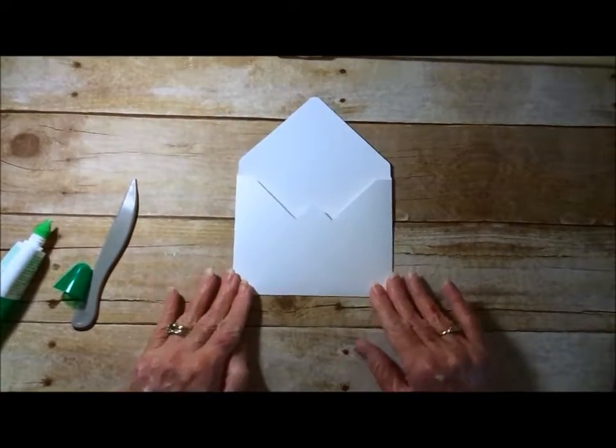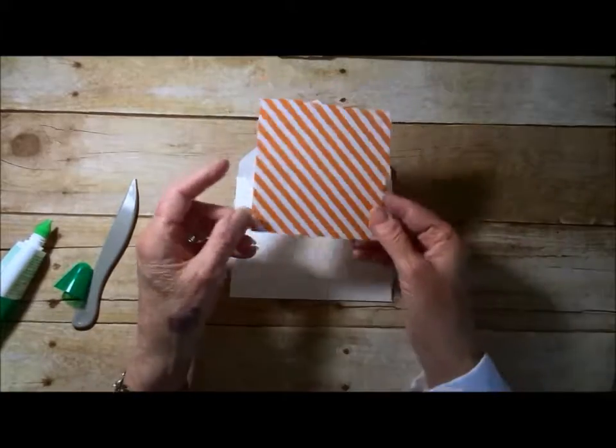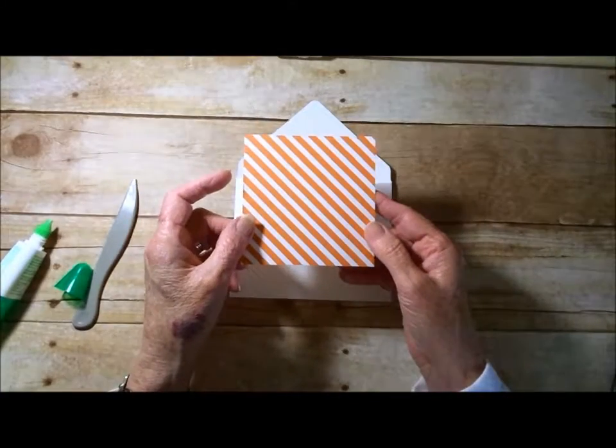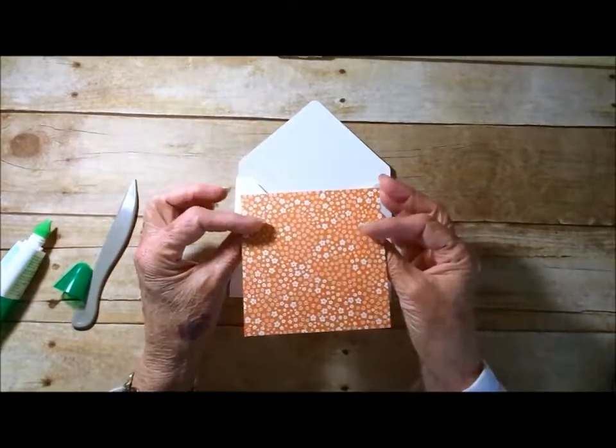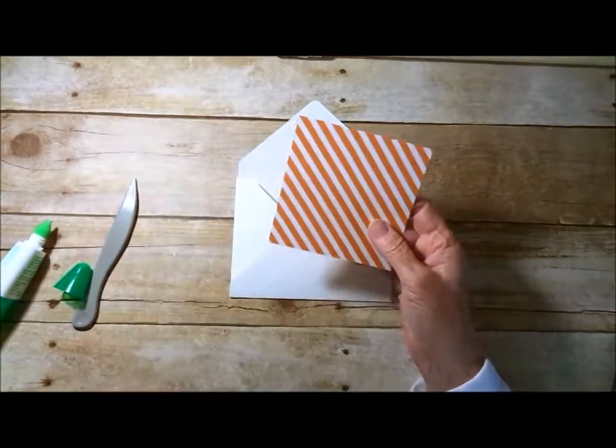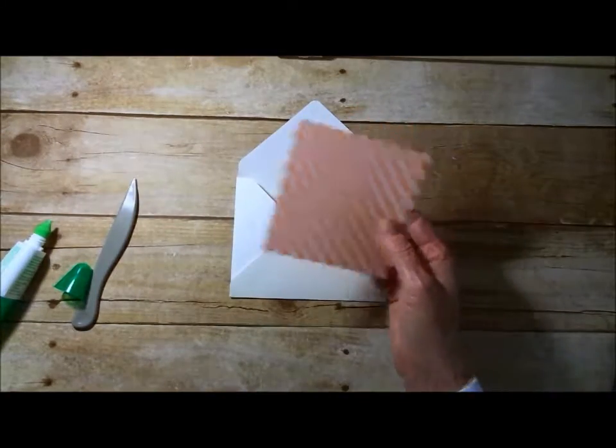Today we're going to line our envelope. So I have cut out a square of designer series paper, four inch by four inch. And again with the envelope punch board, we're just going to round three corners.